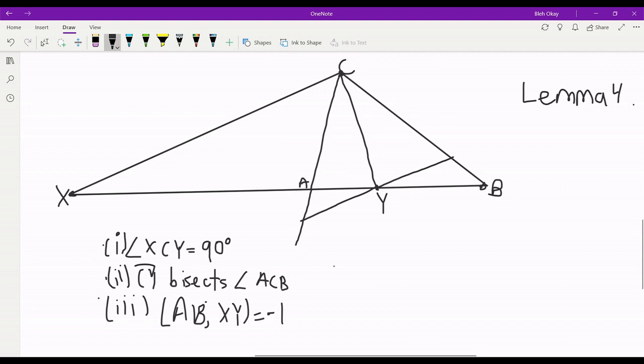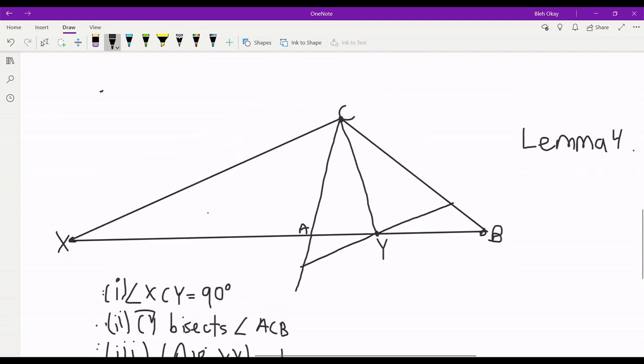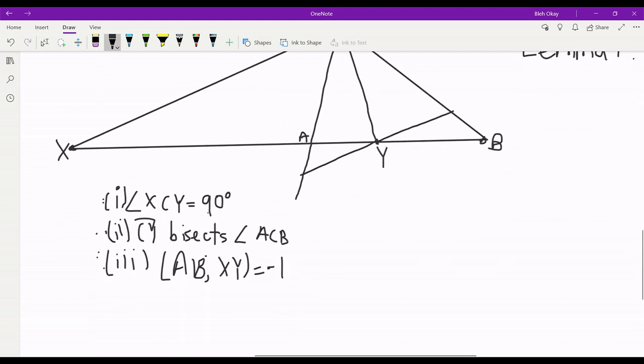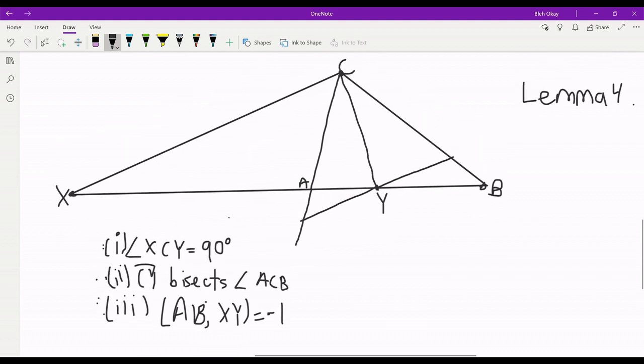Now our lemma states that if we take any two of these conditions to be true, then the third one must be true as well. It doesn't matter which two we take. We could take two and three, those would imply one, or we could take one and three and those would imply two, and so on. Such a lemma would require three cases, but what we can do is use projection to rewrite the three conditions so that the lemma becomes more obvious.